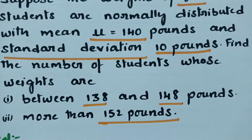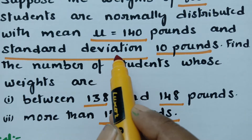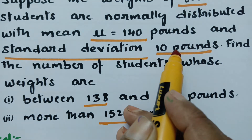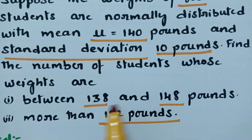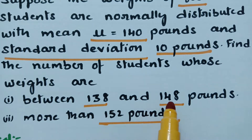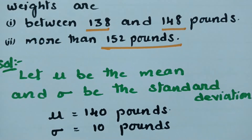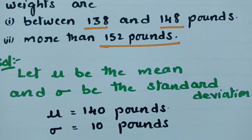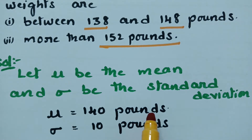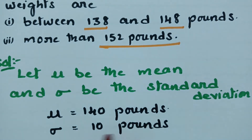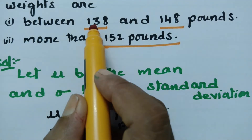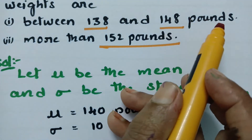Given: mu is equal to 140, standard deviation sigma is equal to 10 pounds. Let mu be the mean and sigma be the standard deviation. First question is weights in between 138 and 148 pounds.